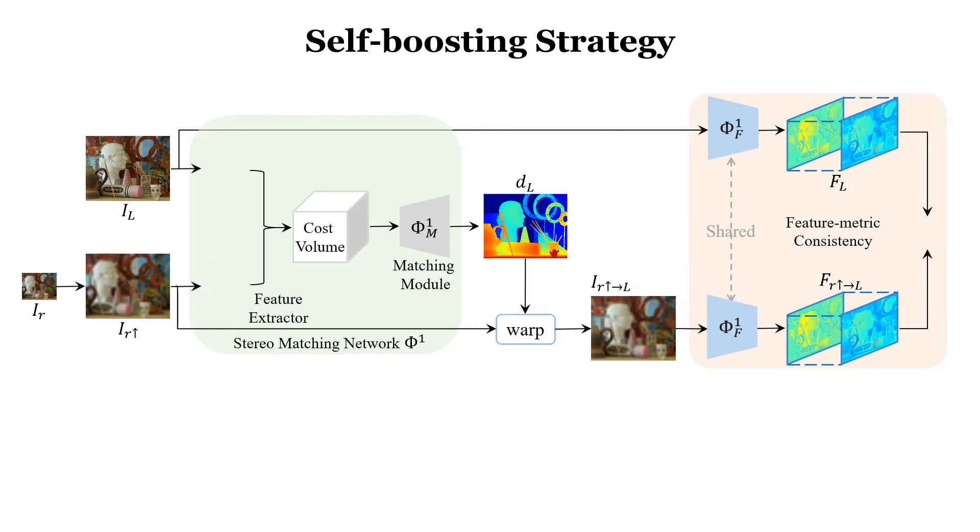After fine-tuning, a boosted feature extractor formulates a better feature metric loss LFM1, which is utilized in the next training stage. Following this way, we iteratively fine-tune Φk with the progressively boosted LFMk-1. Therefore, with this self-boosting strategy, we can obtain continuously optimized networks with progressively strengthened feature metric consistency.